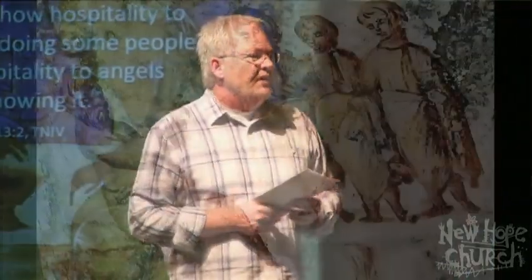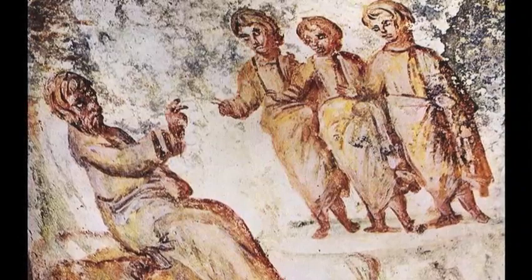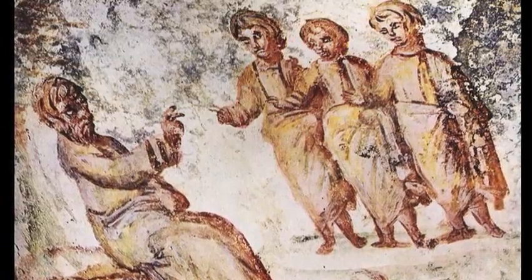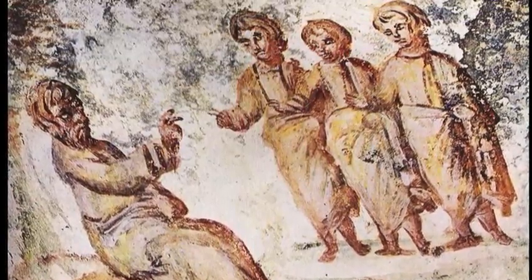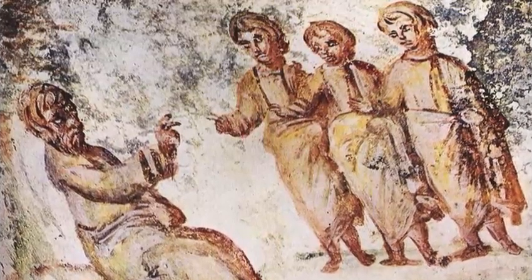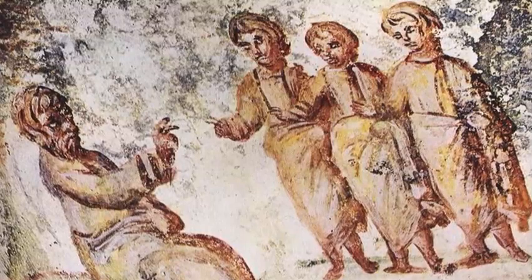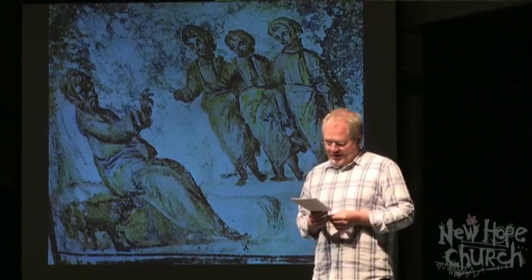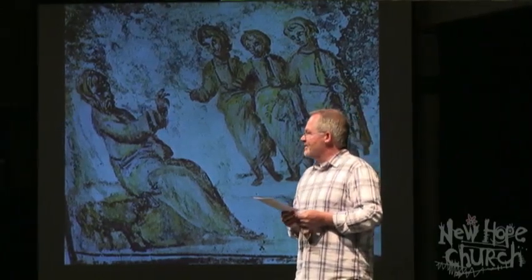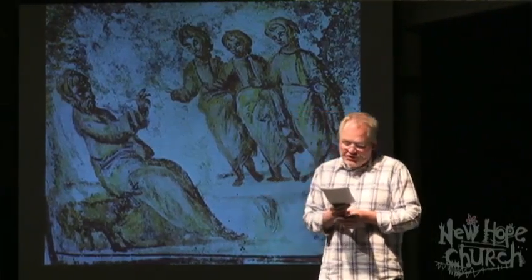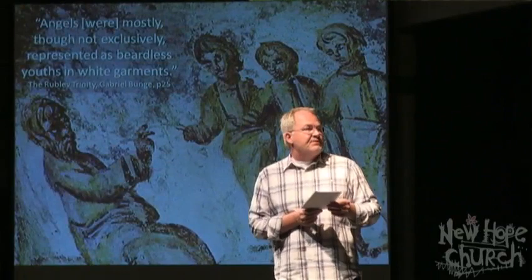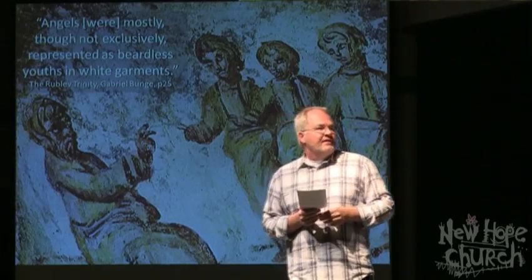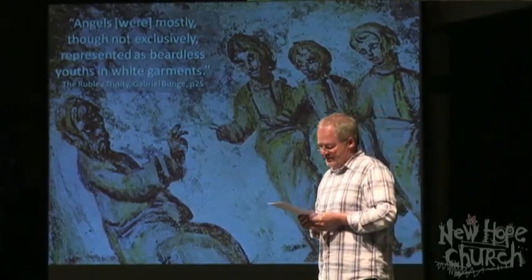The oldest depiction of the story is this particular fresco, fourth century, found in a catacomb in Rome called the Via Latina. The original first iconic painting of the story of Genesis looked like this — just three men who actually don't even look like men. No beards; they look almost like young boys. No wings, no halos. But back then, according to Gabriel Bunge, angels were mostly, though not exclusively, represented as beardless youths in white garments. So even in the fourth century, they were painting this story as angels meeting with Abraham.